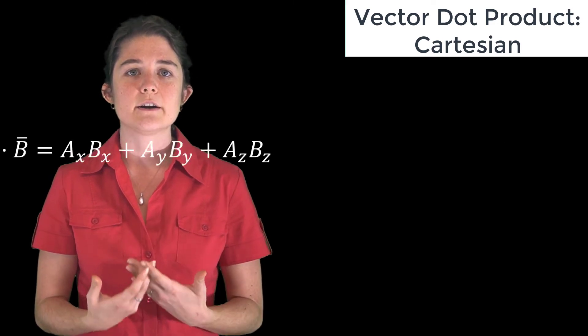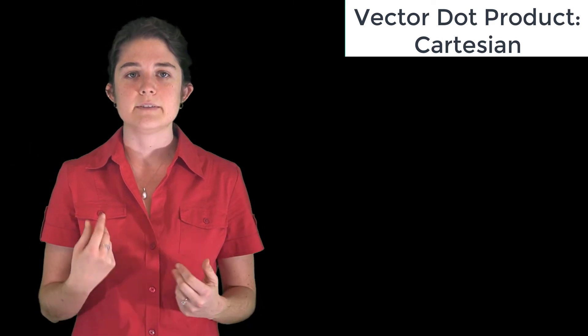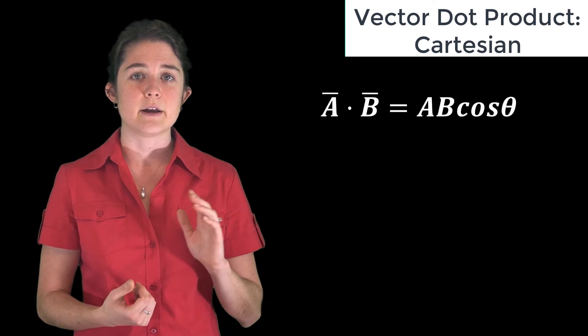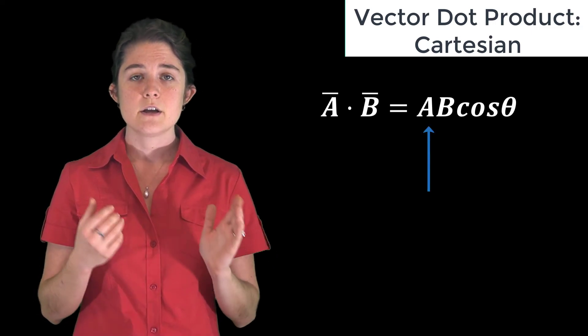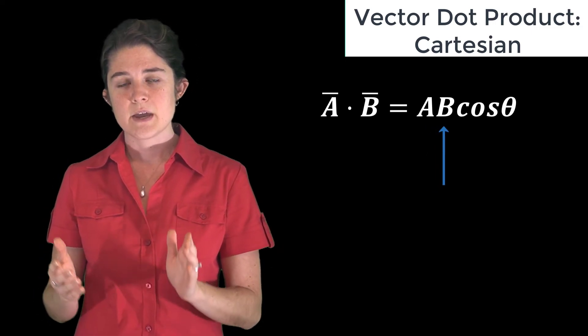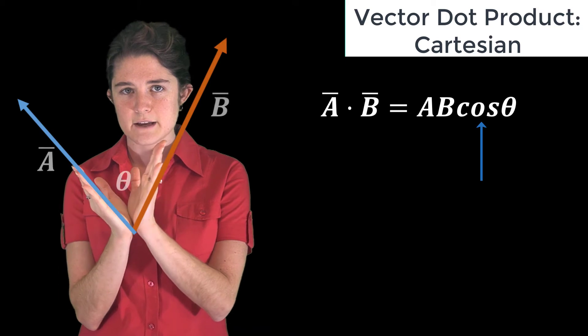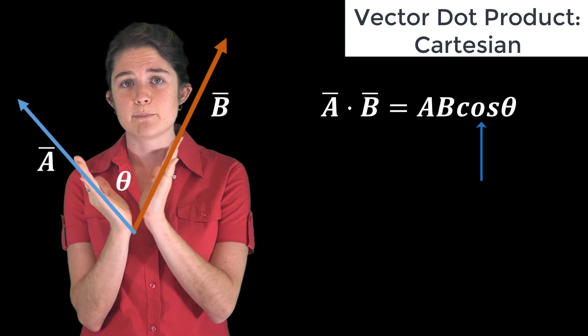The dot product can also be considered graphically. In this case, the dot product is given as the product of the magnitude of the first vector, the magnitude of the second vector, and the cosine of theta, which is the angle between the two vectors if they're both plotted at the origin.